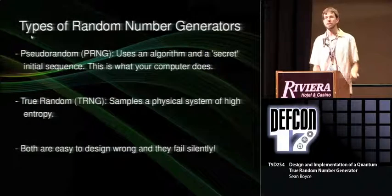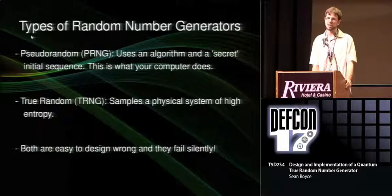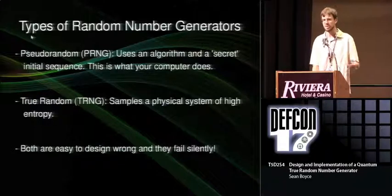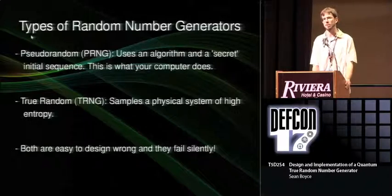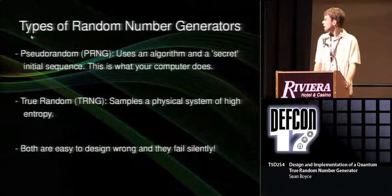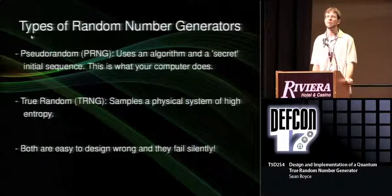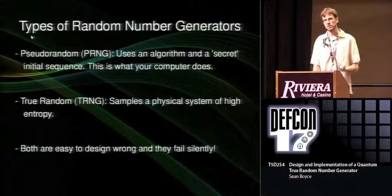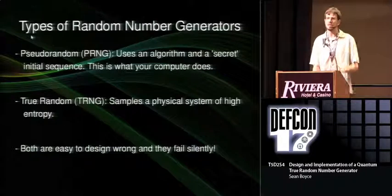If you wanted random numbers, you have two basic approaches. You can use a pseudo-random number generator, which uses an initial secret starting condition and an algorithm to generate a deterministic sequence of numbers — considered a good enough approximation to the random distribution for many purposes. Or you can use a true random number generator, which really samples random numbers by taking a chaotic physical system and measuring variation in that system.